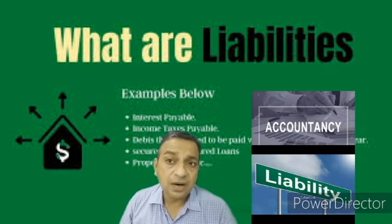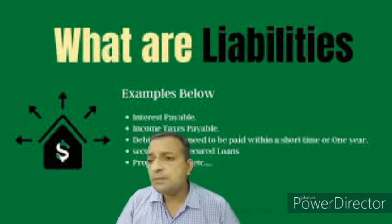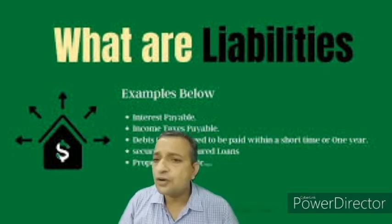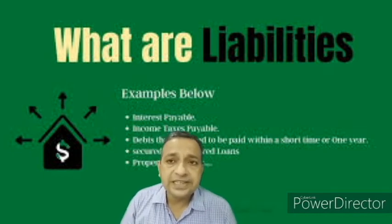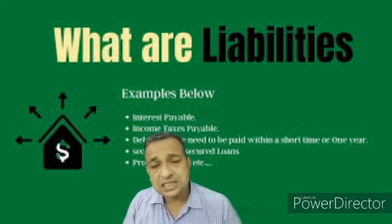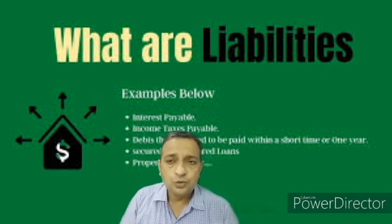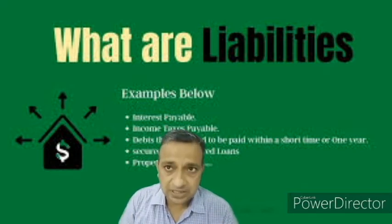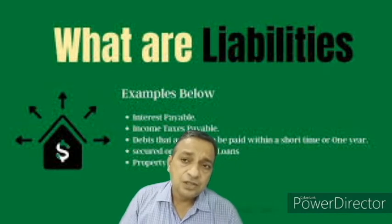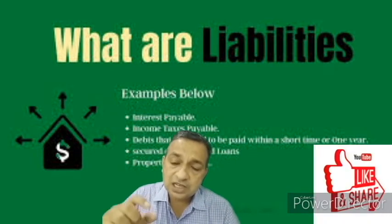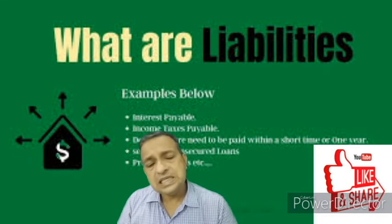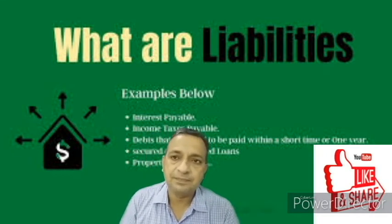Then external liabilities — the amount owed by the business enterprise to outsiders. When the businessman has to pay money to outside people, such liabilities are known as external liabilities. Such as bank loan, creditors — bank is an outside party, not part of the business. Creditors are those to whom money is owed because goods were purchased on credit from them. Bills payable, bank loan — all this money has to be paid at a specific future time due to a past obligation. All such liabilities are called external liabilities.